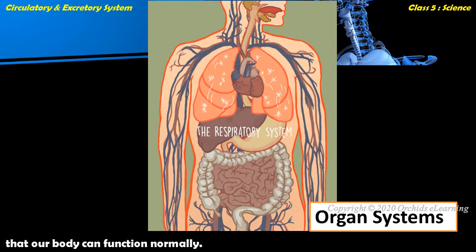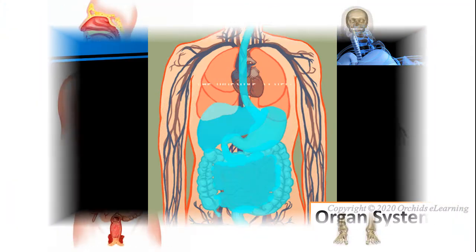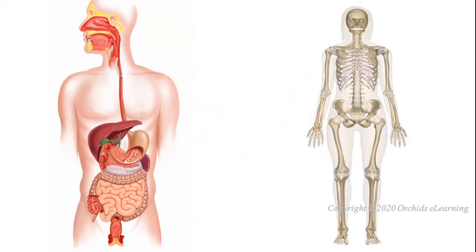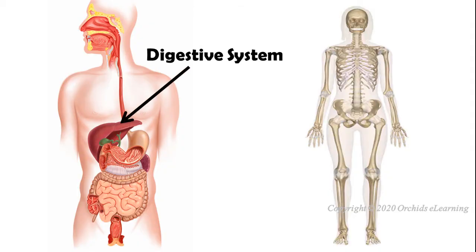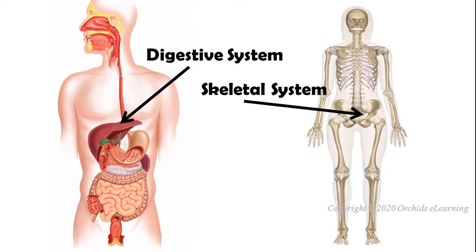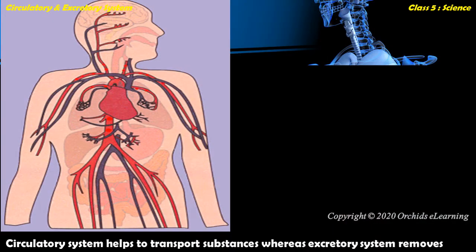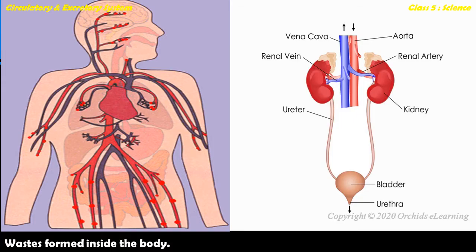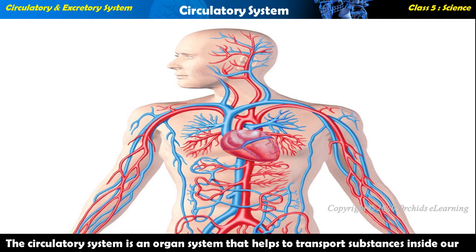So that our bodies can function normally. Look at the pictures given and name the organ system shown — they are the digestive system and the skeletal system. Now let us learn about the circulatory system and the excretory system. The circulatory system helps to transport substances, whereas the excretory system removes wastes formed inside the body.